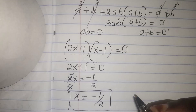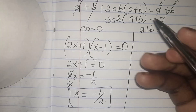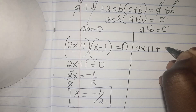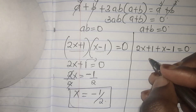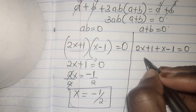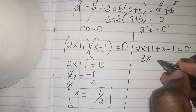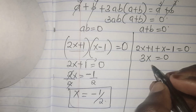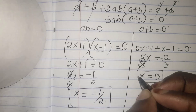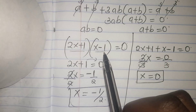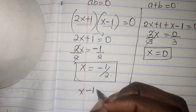Since it's a cubic equation, we shall have three values of x. From a plus b equals 0: (2x plus 1) plus (x minus 1) equals 0, which gives 3x equals 0. Dividing by 3, x equals 0. This is our second value of x.